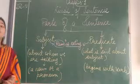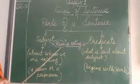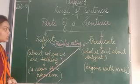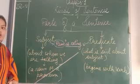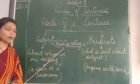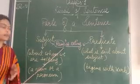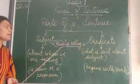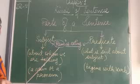Now let us understand this with one example: Ram is eating. In this sentence, about who are we talking? We are talking about Ram. Who is eating? Ram is eating. So we are talking about Ram — that Ram is eating. So Ram is the subject.